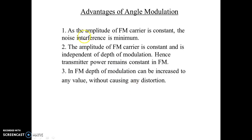The advantages of FM — as an angle modulation scheme — are that the carrier amplitude is constant, so noise interference is minimized. The amplitude of the FM signal is constant and independent of the depth of modulation, so transmitter power remains constant. Also, the depth of modulation in FM can be increased to any value without causing distortion. Thank you for watching; I hope you understand the difference between FM and PM and how they are generated.